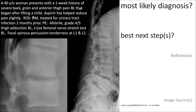The first case is a 40-year-old woman who presents with a one-week history of severe back, groin, and anterior thigh pain bilaterally that began after lifting a child. Aspirin has helped reduce the pain slightly. She has diabetes mellitus and was treated for a urinary tract infection two months ago. She's afebrile and has grade 4 out of 5 thigh adduction strength bilaterally and a positive femoral nerve stretch test on both sides. L1 and L2 spinous processes are tender to percussion.